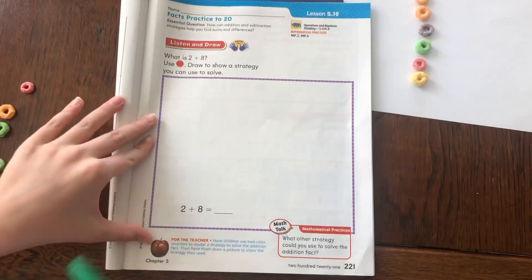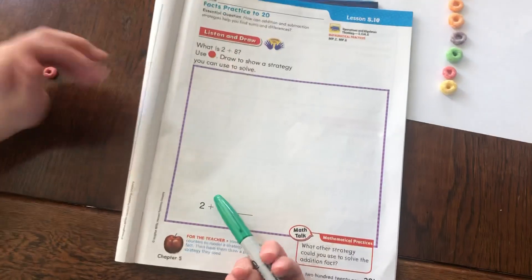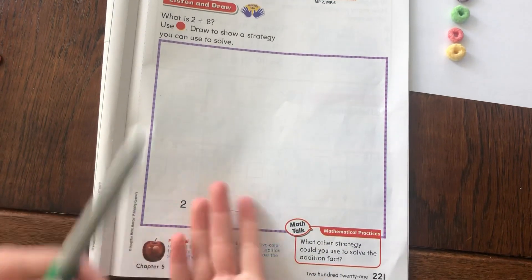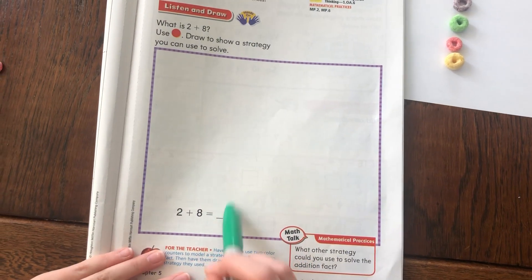So how would you complete the page then where it's asked you to draw a model? What would you do here? Well, since it tells you to draw a model, you can do circles, or you could do squares, or anything like that. And then you would write your answer right here.